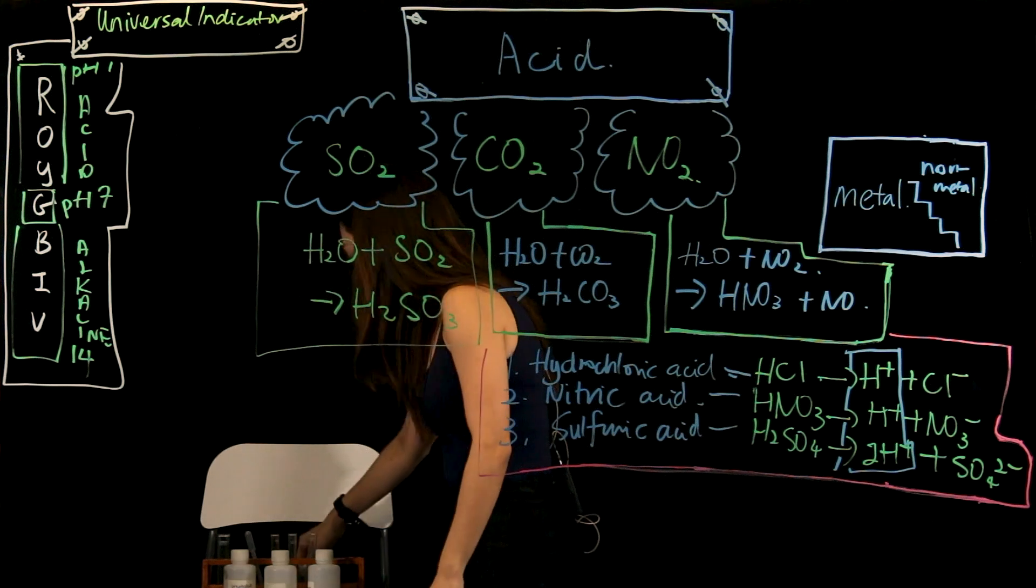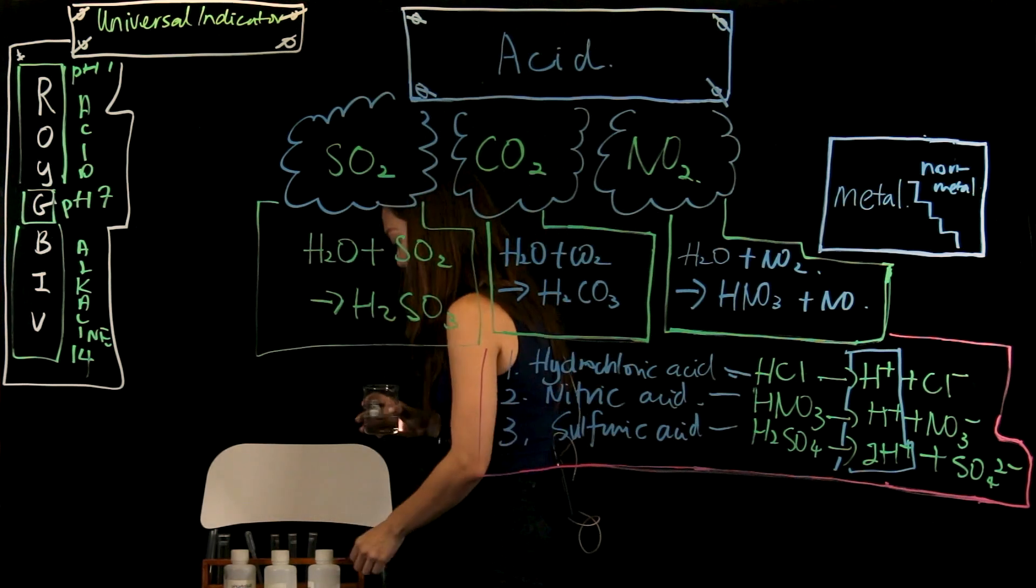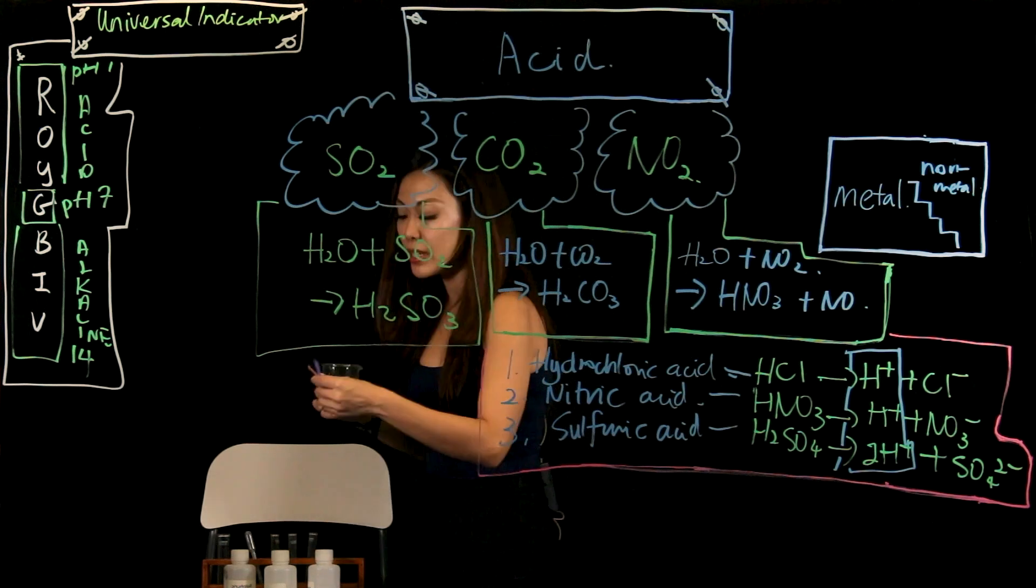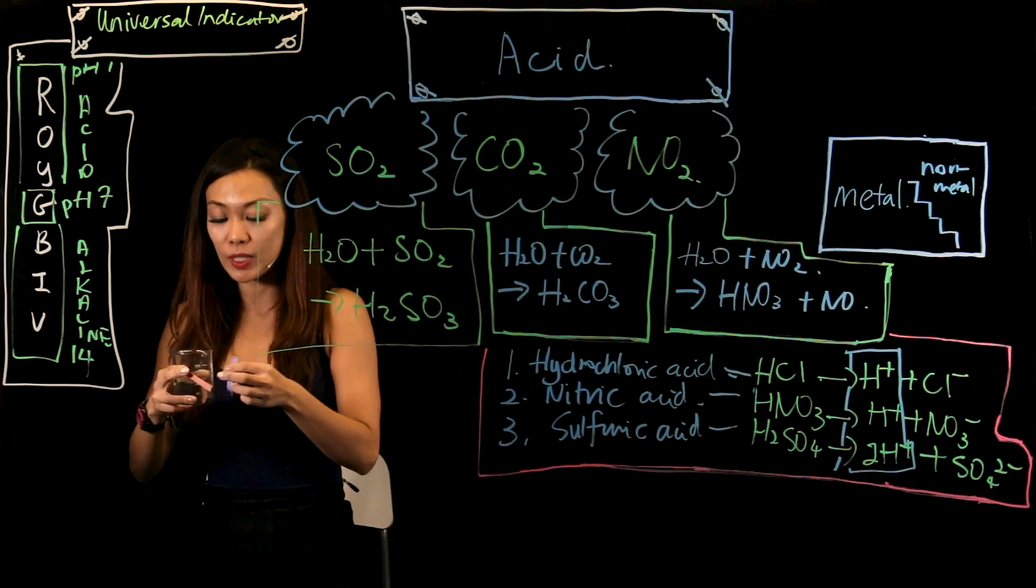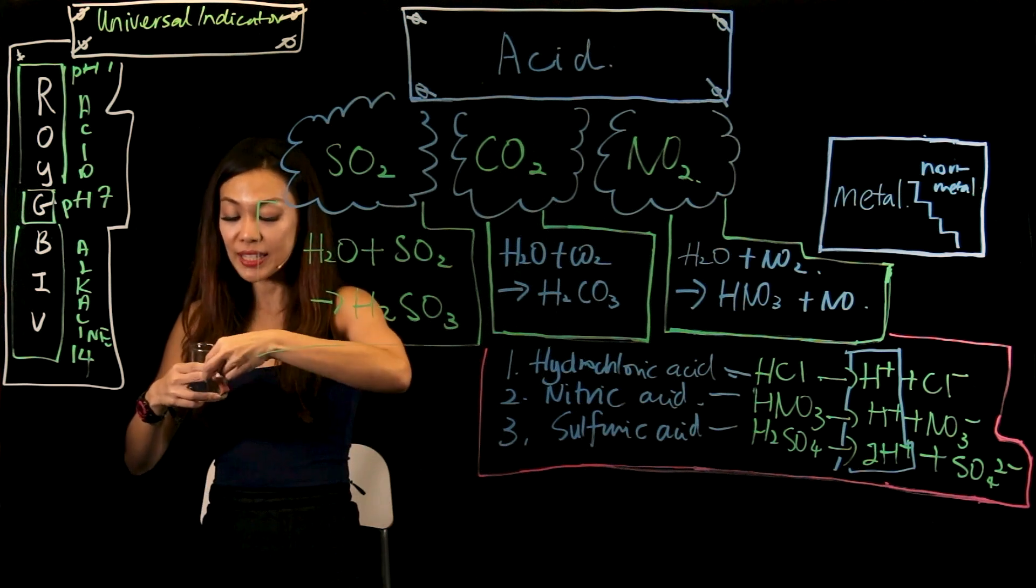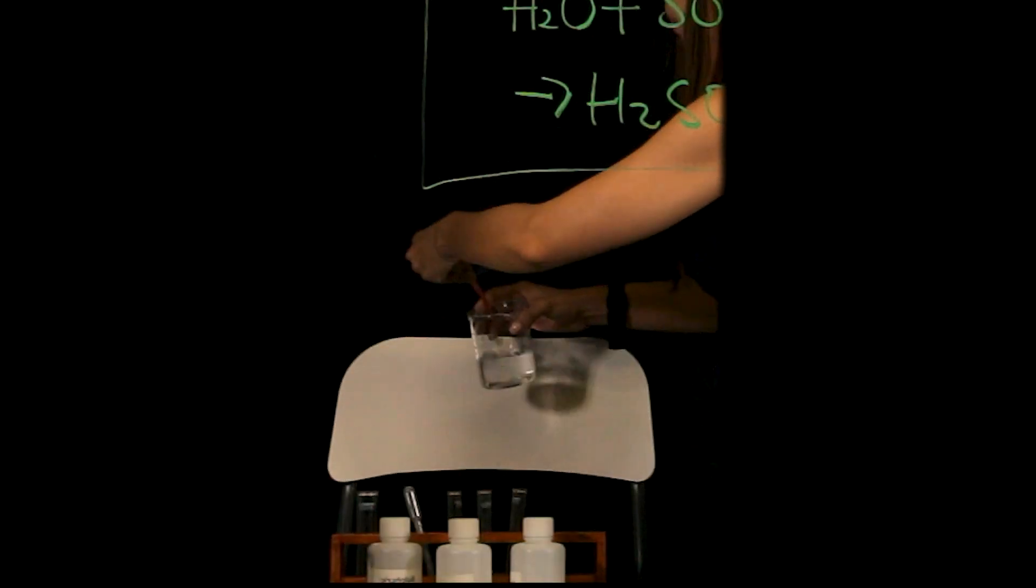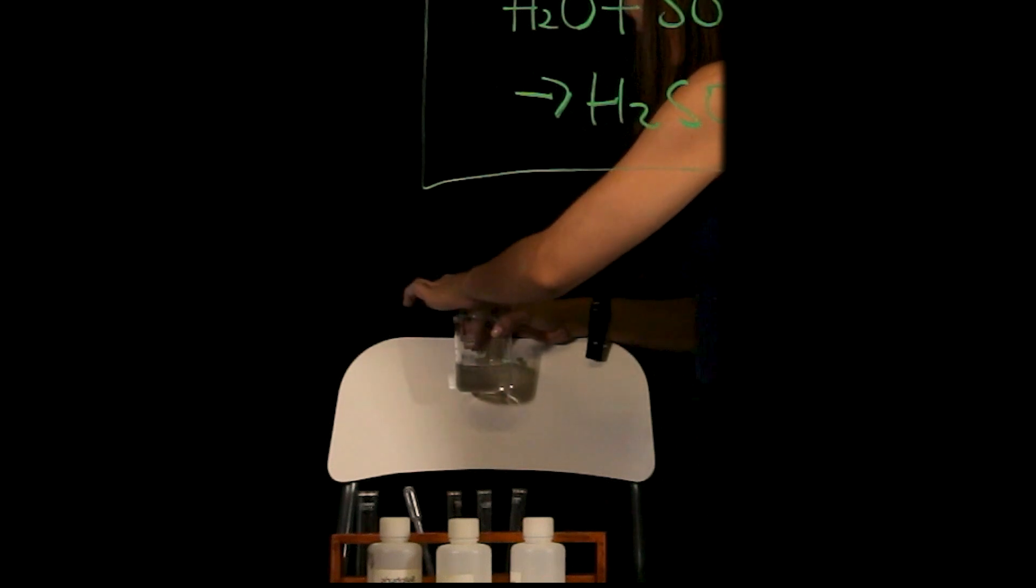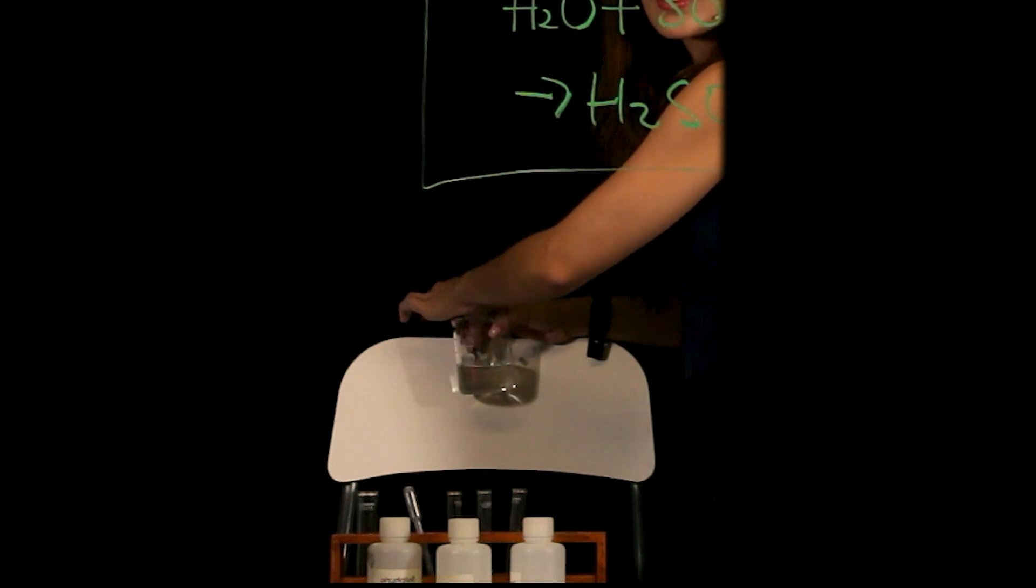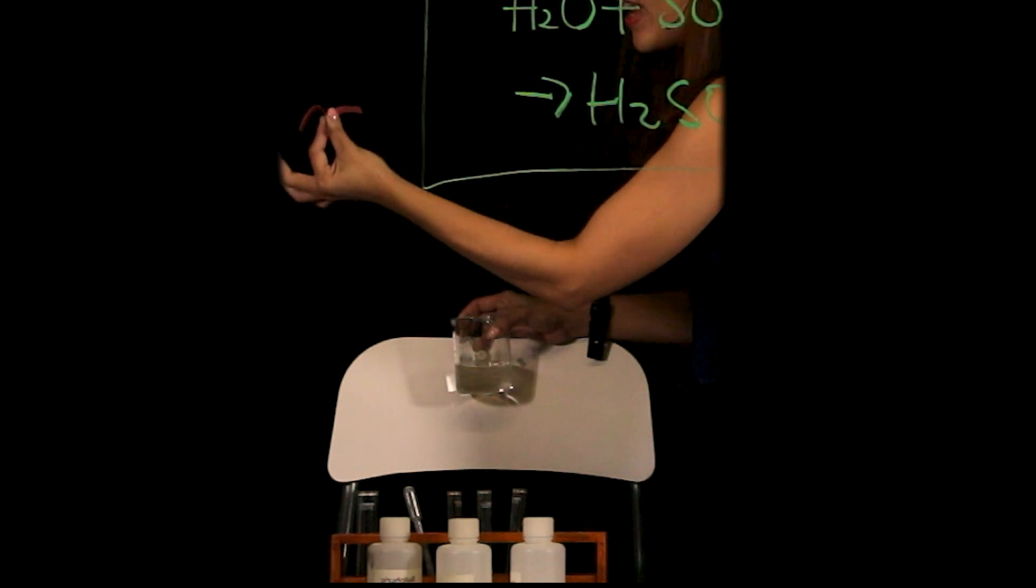So I have with me here sulfuric acid. Now, before I put in the universal indicator, you can also use two things: either a blue litmus paper or a red litmus paper. But let me see, if I put the red litmus paper in, any color change? Nothing, because this is acid. But if I put the blue one in, can you see that it actually changes color to what color? Pink in color.